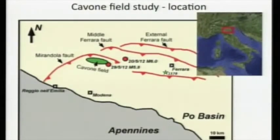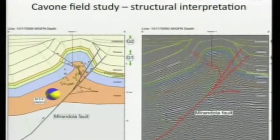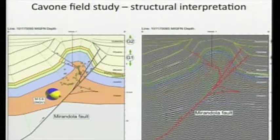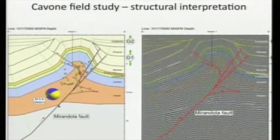We need to start with a model of the geologic structure. This is the area of the Cavoni field, shown here in green. This is the epicenter of the 1570 Ferrara earthquake, the magnitude 6 May 20th event, and the aftershock event that happened near the edge of the Cavoni field. These geologic models were put together with great effort by the group at Harvard, starting with seismic sections and ending up with geologic structural representations. The Mirandola fault is the fault that the May 29th aftershock happened on.